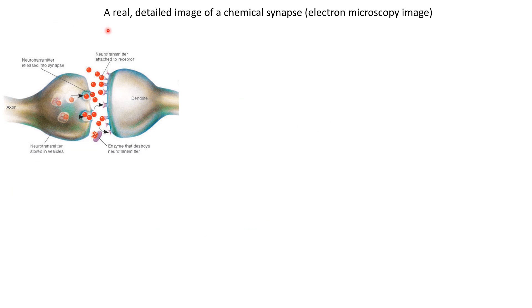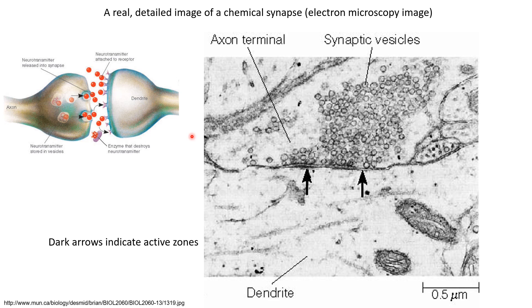Now I am going to show you a real image of a chemical synapse from electron microscopy. One thing you will immediately notice is that it looks quite different from the diagrammatic representation we have been seeing. The main difference is in the spacing between neurons — in the real brain tissue, neurons are very densely packed with hardly any free space. This is a zoomed-in image of a slice of brain. This structure is the axon terminal of the first neuron, and on the other side is the dendrite of a second neuron. These small balls are the synaptic vesicles in the axon terminal, each containing thousands of neurotransmitters. This very small space is the synaptic cleft into which the neurotransmitters would be released.